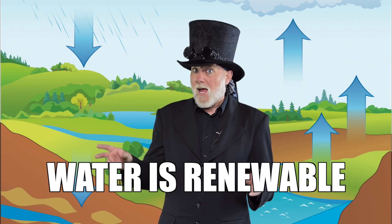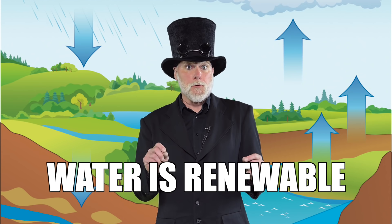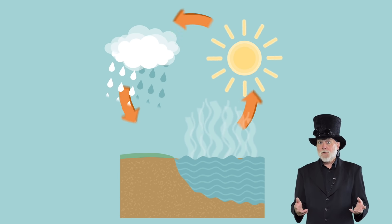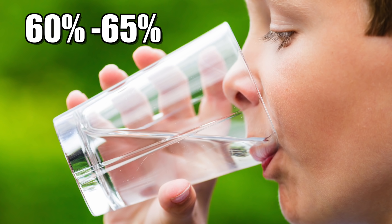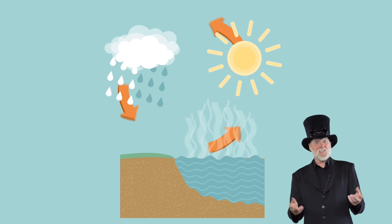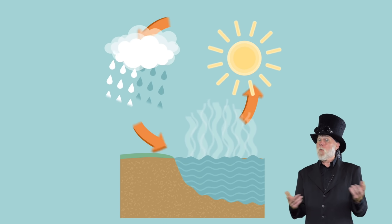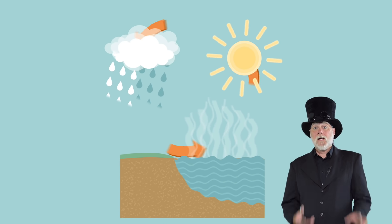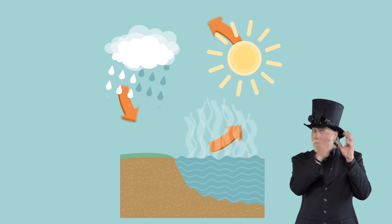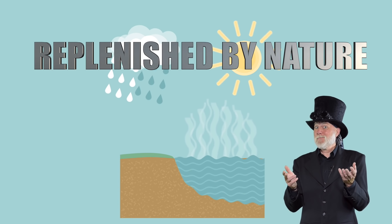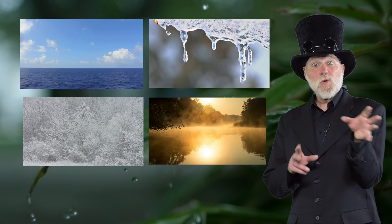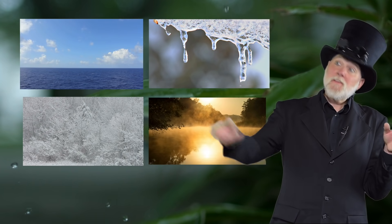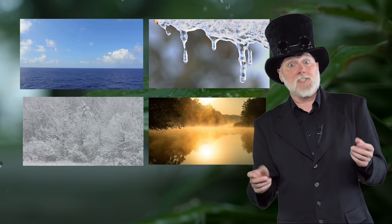Water, through the water cycle, is replenished or renewed much, much more quickly. The water that we drink, which incidentally makes up most of our bodies, is replaced in a short period of time by the water cycle — evaporation, condensation, precipitation. Replenished by nature. That's what makes it renewable. It's a cycle.